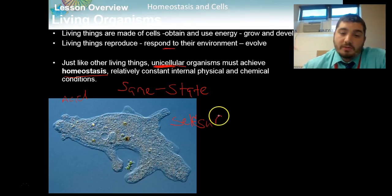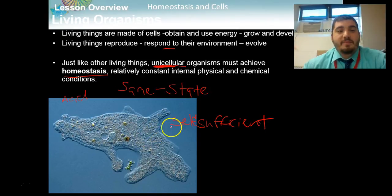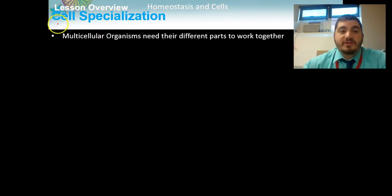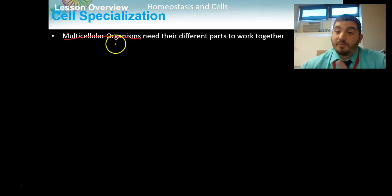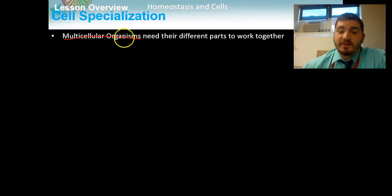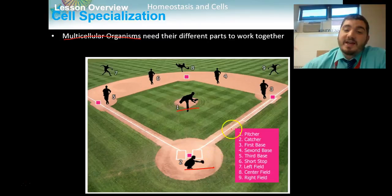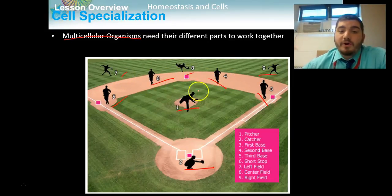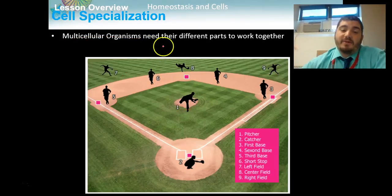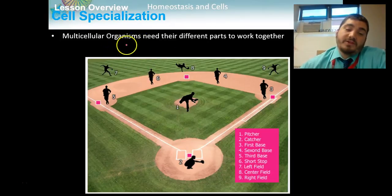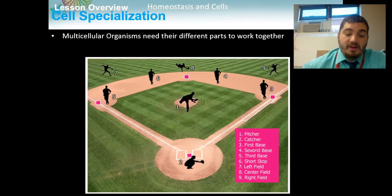Unicellular organisms do everything on their own with just one cell. This is very different from multicellular organisms, where we begin to talk about cell specialization. Multicellular organisms — everything from little tiny lizards to humans and hippos — need their different parts to work together. A good way to think about it is like a baseball team: if you were just one person, there's no way you could win a baseball game. You need all nine positions — a pitcher, a catcher, guys on all the bases, a shortstop, outfielders. All these different parts need to work together for the team to win, and multicellular organisms work in exactly the same way.